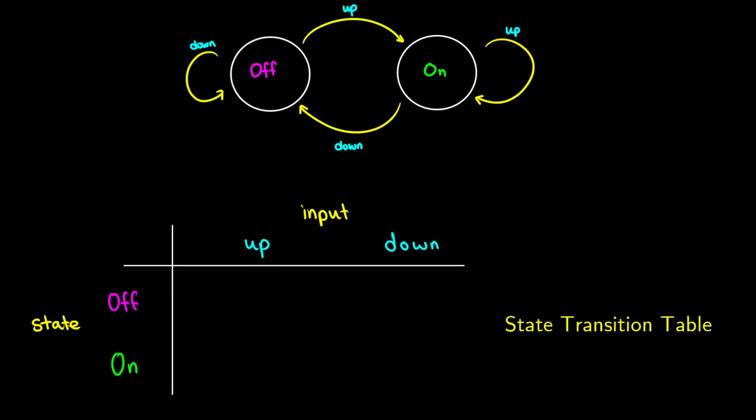What we're going to do is start by looking at a state transition table. This will track how things change depending on the state we start in and the input we give it. On one side of our table, we list all of the states that we have — in this case, off and on. And for the inputs, we write those on the other side of the table. So on the top, we have two different things we can do to the switch: turn it up or turn it down. So the first thing is, what happens if we start in the off state and we flick it up? This is filling in the first entry.